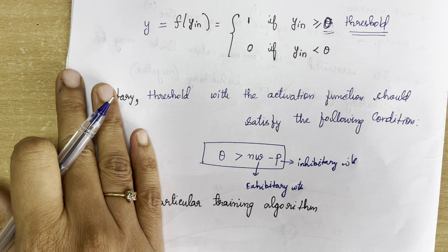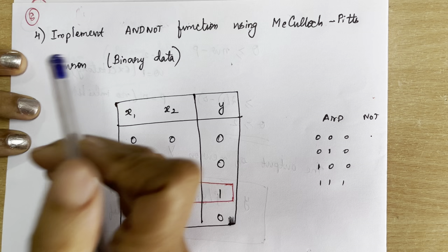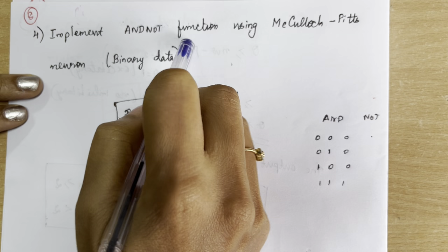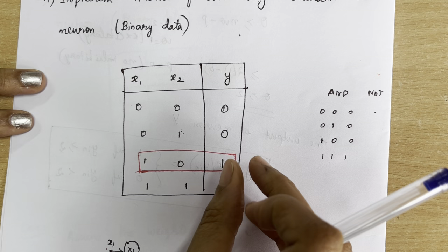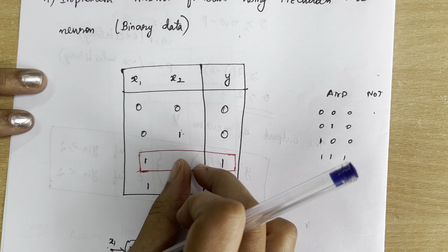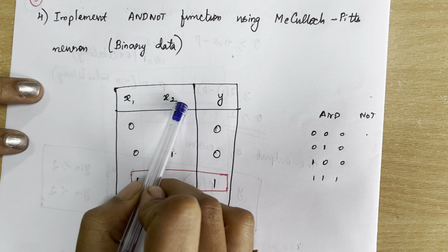Now we will see a simple example of how to use the McCulloch-Pitts neuron. We will see how the AND-NOT function is implemented using the McCulloch-Pitts neuron, using binary data. The AND-NOT function output is true only if the first input is 1 and the second input is 0. We will first draw the truth table for this AND-NOT function.